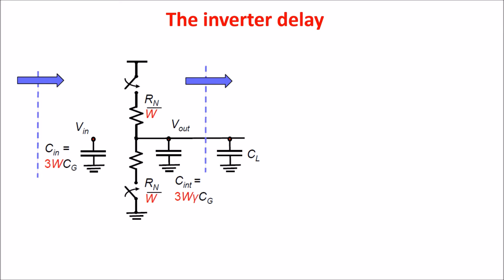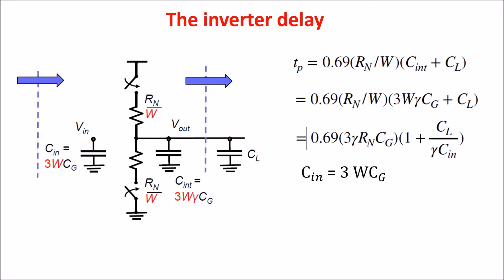Now, we see the case in which we consider both the intrinsic capacitance and the load capacitance. So, the inverter has to charge and discharge Cint plus Cload. We can write the relation in this way, remembering Cint is equal to 3Wγ Cgate, and in this other way, keeping in mind that Cin is equal to 3WCgate. We can write the last formula in this way, defining τp0 as the intrinsic delay of the inverter, and the ratio CL over Cin as the fan-out ratio of a load capacitance to an input capacitance.